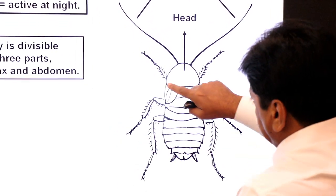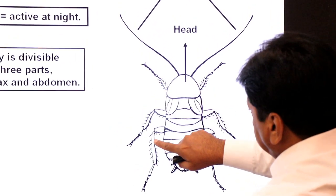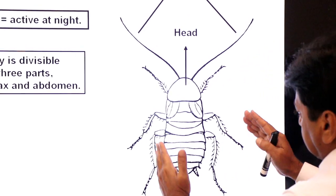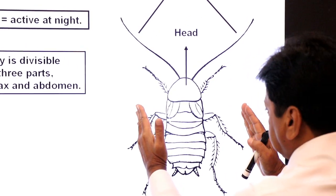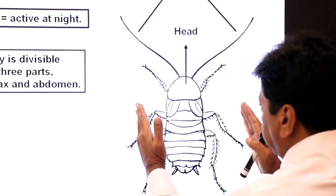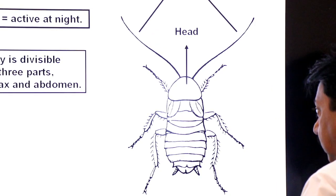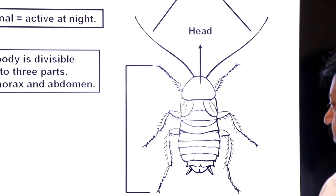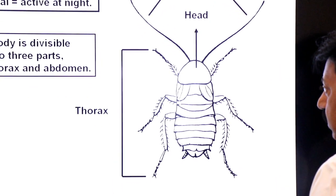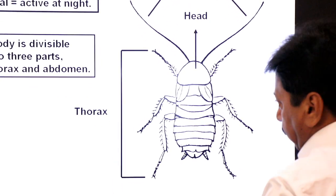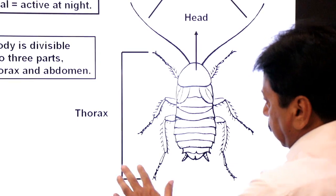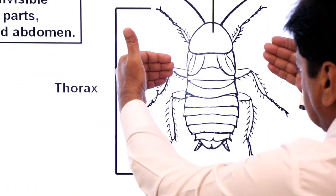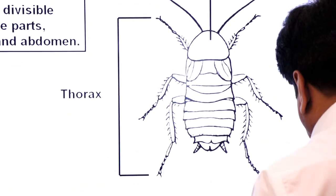A cockroach has six legs — three on the left side and three on the right side. The middle portion of the body of cockroach is called thorax, and the six legs are present in the thorax.